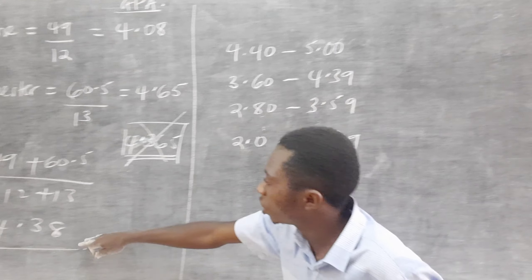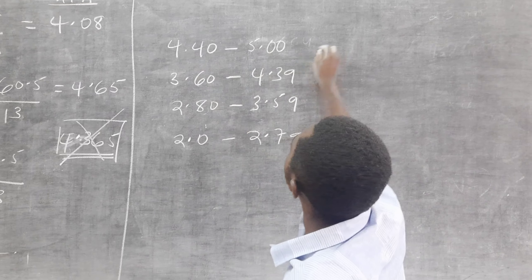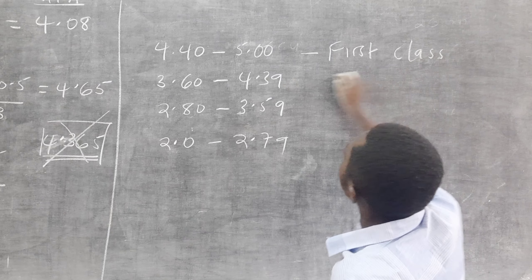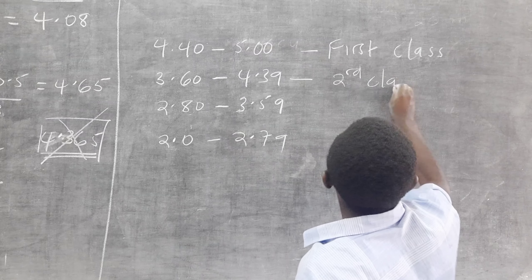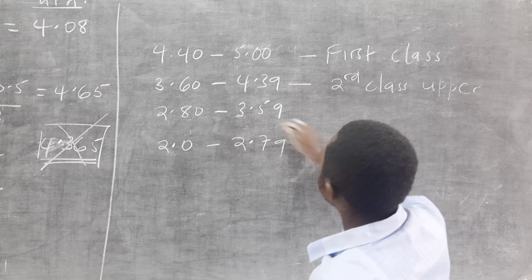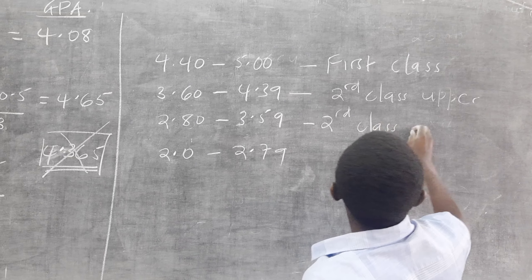After getting to the CGPA, you come to the class degrees. From here to here, it is the first class. From here to here, it is the second class upper. From here to here, it is the second class lower.